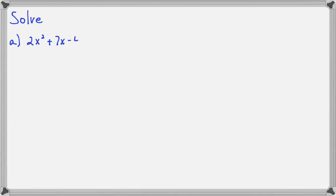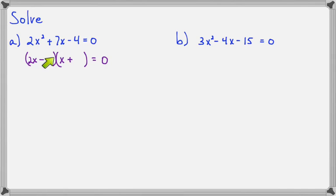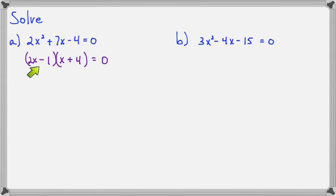Now we're going to do a couple of other examples together. Notice that both of these examples start out with the equation equal to 0, so we can start factoring right away. This is a trinomial and it will factor into two binomials. First times first needs to be 2x squared, so I'll use 2x times 1x. The signs need to be different. Last times last has to be 4, so either 2 times 2 or 1 times 4. Because of the 2x already present, we can't use 2 times 2, so we'll go with 1 and 4. Outer times outer is 8x, inner times inner is negative 1x, so 8x minus 1x is 7x.